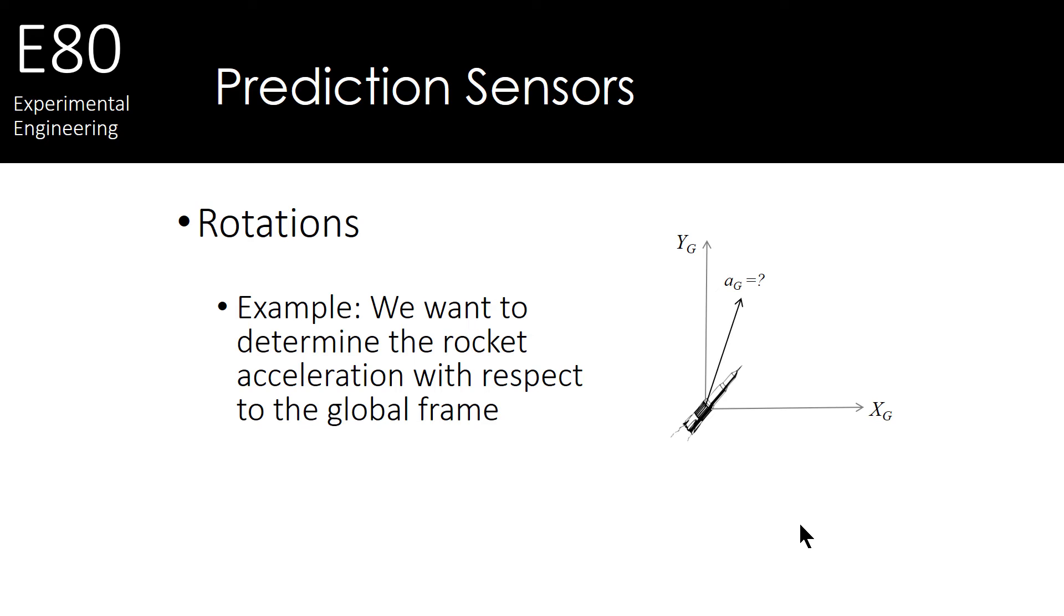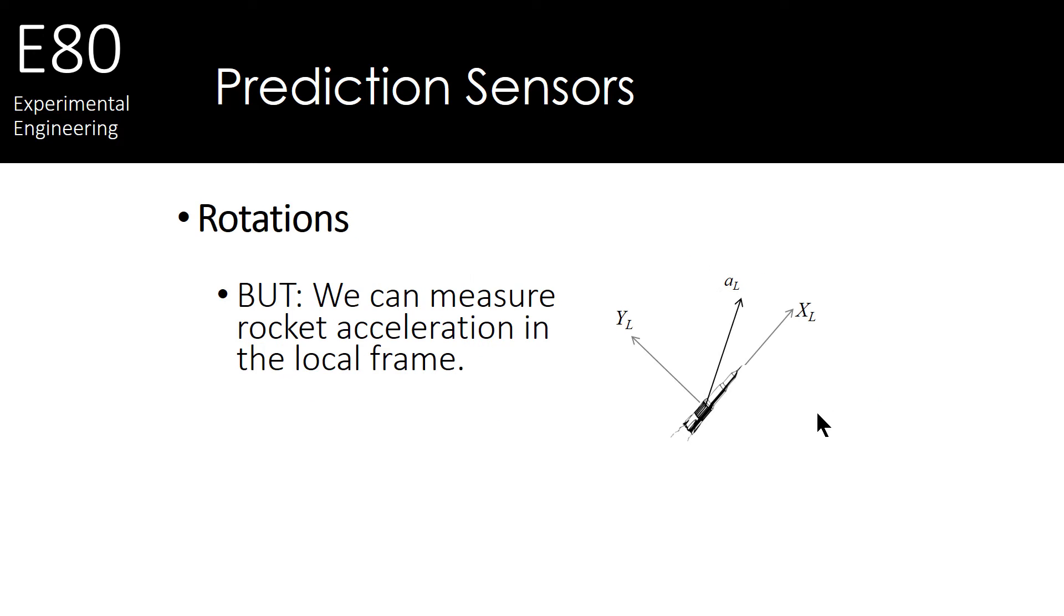Let's say we've got a rocket that we're shooting off. And we've got its acceleration. We might want to know its acceleration with respect to this global coordinate frame, with respect to its launch pad, for example. But if we use IMUs, we're taking measurements with respect to its local frame. We probably fixed our IMU with accelerometers facing in this direction and maybe this direction, but not with respect to the global frame.